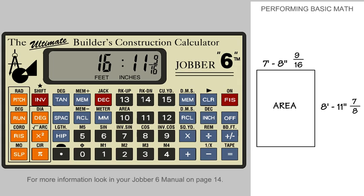Now, let's subtract this dimension from a larger dimension — say, 22 feet, 7 and 15 sixteenths. First, we change the 16 feet, 11 and 9 sixteenths dimension to a minus dimension by pressing the plus/minus key. Now enter the 22 feet, 7 and 15 sixteenths dimension, but first we must press the plus key.